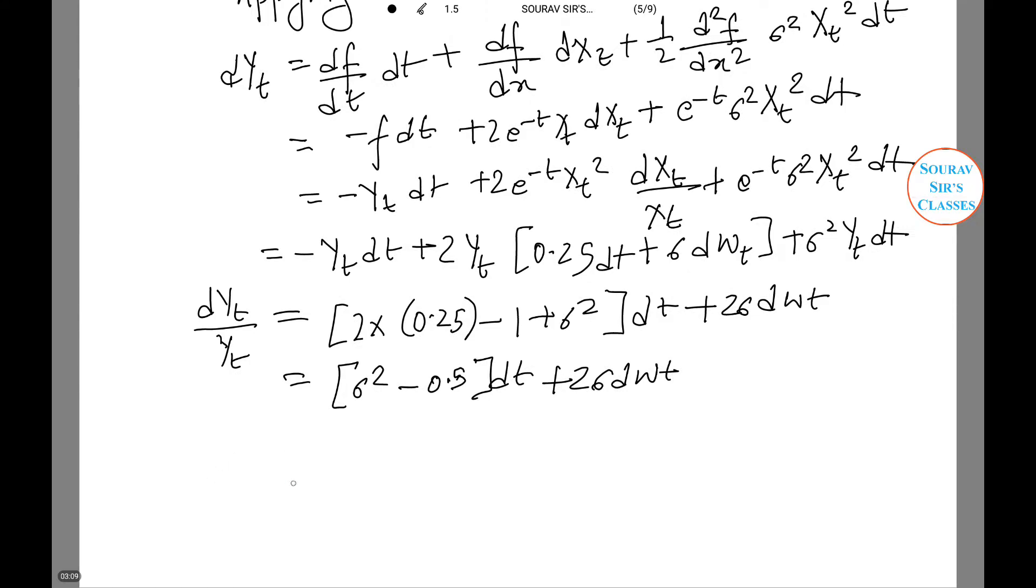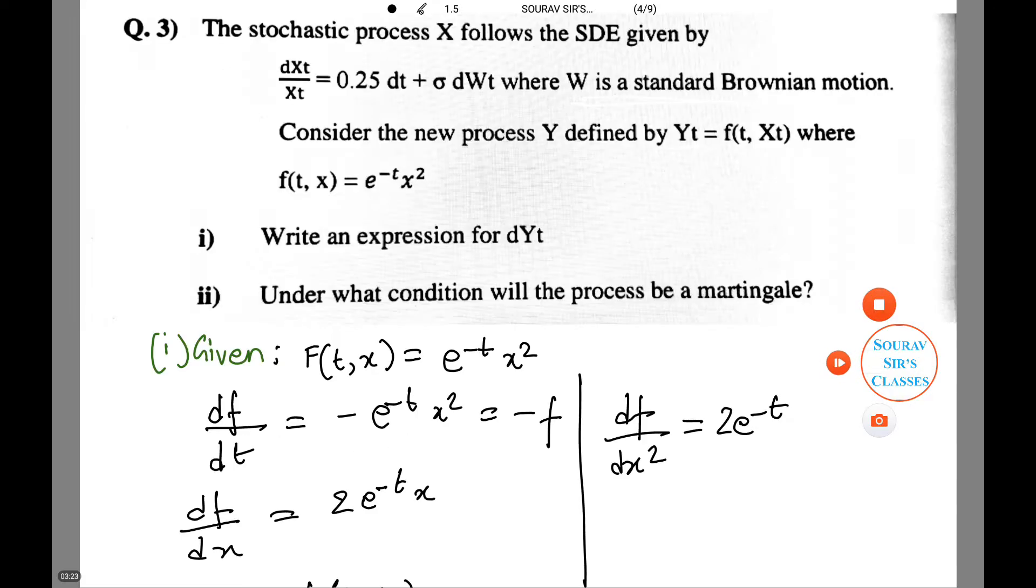And thus this comes to an end of the first question. Let us see what part 2 asks of us. Under what condition will the process be a martingale? Let's again see how to do this.